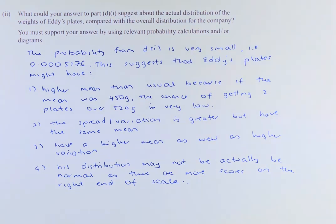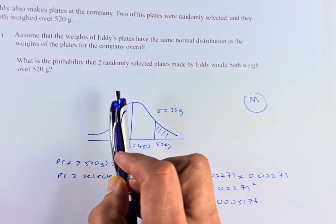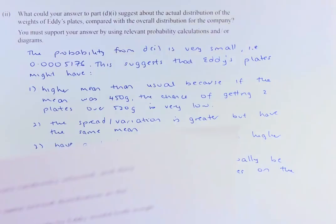It might have higher mean than usual because if the mean was 450, the chance of getting two plates over 520 is very low. So in other words, the mean for Eddie, from this graph, the mean should be shifted more to the right, so the mean should be higher.